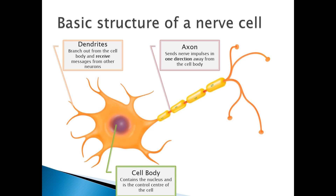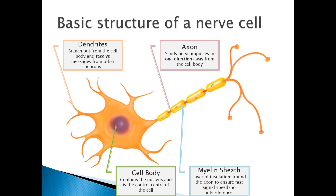Around the axon — and some neurons do have this, some don't — we have what we call the myelin sheath. This is a coating around the axon, like a layer of insulation, and it allows the signal to travel much faster and helps insulate it from other nearby neurons. At the end of the axon we have terminals, which connect up to dendrites from other neurons and help pass the message on.